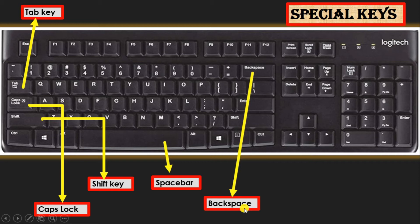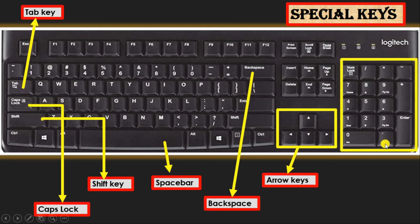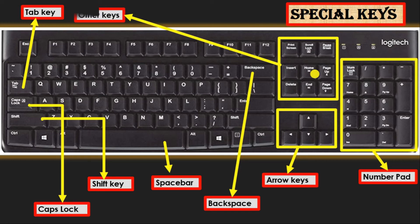The Arrow keys have four directions: top, bottom, left, and right. The Number Pad allows you to enter numbers frequently, and it also includes mathematical operators: plus, minus, multiplication, division, and a decimal point for float numbers. The remaining keys in that section are considered Other keys — like Delete, Insert, Page Up, Page Down — which are not frequently used.